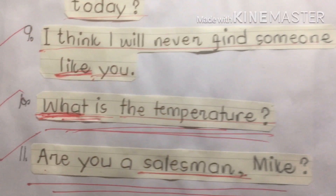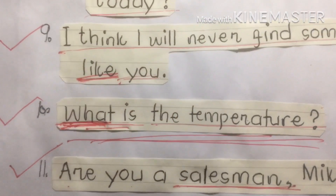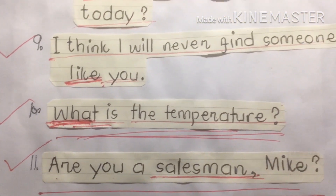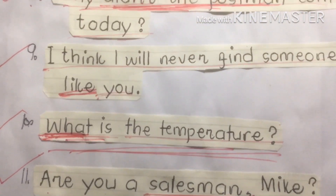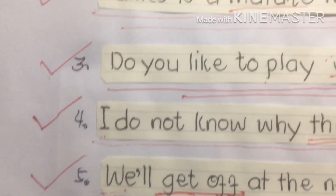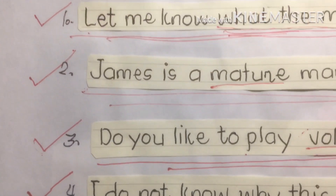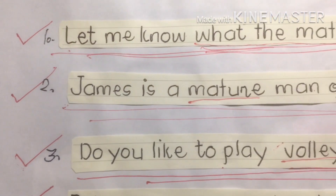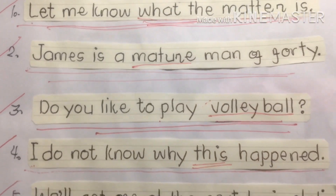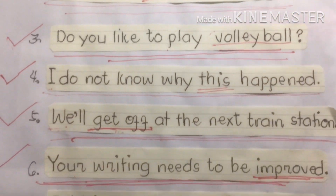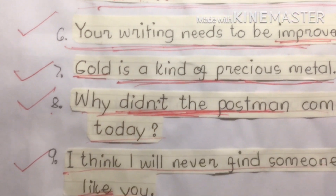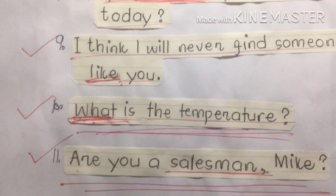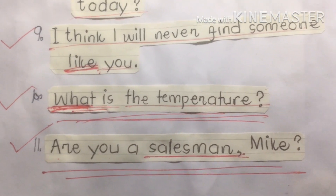So, to recap subject-verb agreement: when the subject is singular, our verb must also be singular. When the subject is plural, our verb must also be in a plural form.